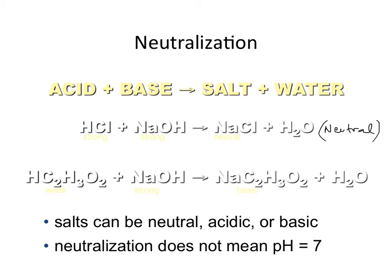If you start with a weak and a strong acid or base, you will end up with a salt and water, but the salt that you obtain will affect the pH — we'll discuss this later. In this situation, if we started with a weak acid, our conjugate base will behave as a base, and you will subsequently get a basic solution.